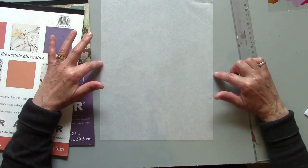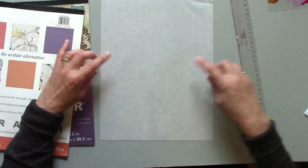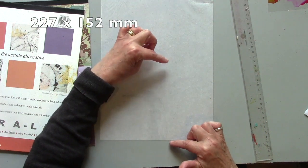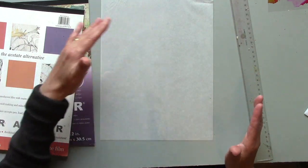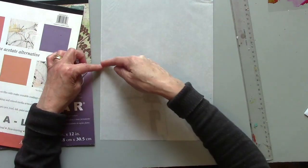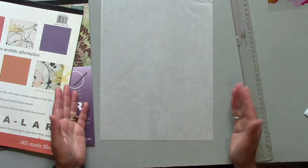My pages actually measure 227 millimeters wide by 152 high, which seems a little bit of a specific measurement, but actually it's a page from the book just cut in half and then folded in half.